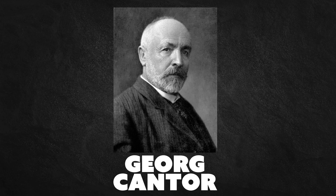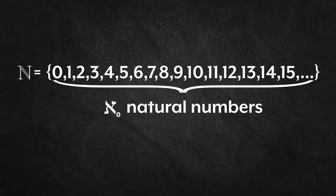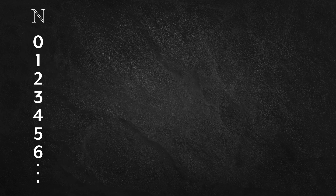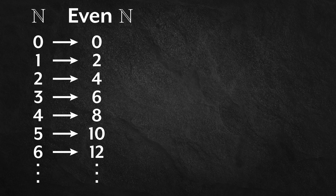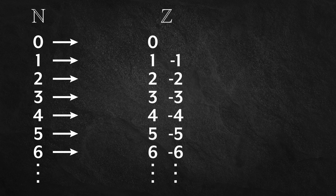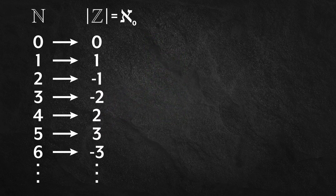Georg Cantor gave us a precise answer to this question. First, to make any progress at answering this question, we have to make one important assumption: we must assume that there exists a complete set of natural numbers, and we say that the cardinality of that set equals aleph-not, which loosely means that there are aleph-not natural numbers. Any set that can be put in a one-to-one correspondence with a set of natural numbers also has a cardinality of aleph-not. For example, we can put the set of even natural numbers in a one-to-one correspondence with a set of natural numbers by pairing each natural number with two times itself. Therefore, the set of even natural numbers has a cardinality of aleph-not. The set of integers can also be put in a one-to-one correspondence with a set of natural numbers, so it also has a cardinality of aleph-not.